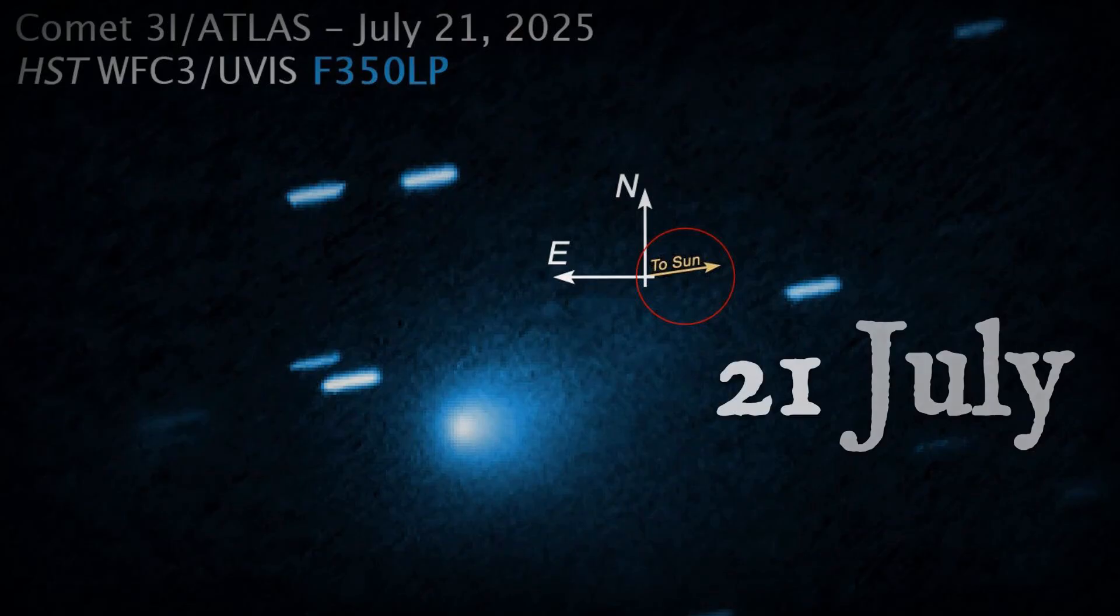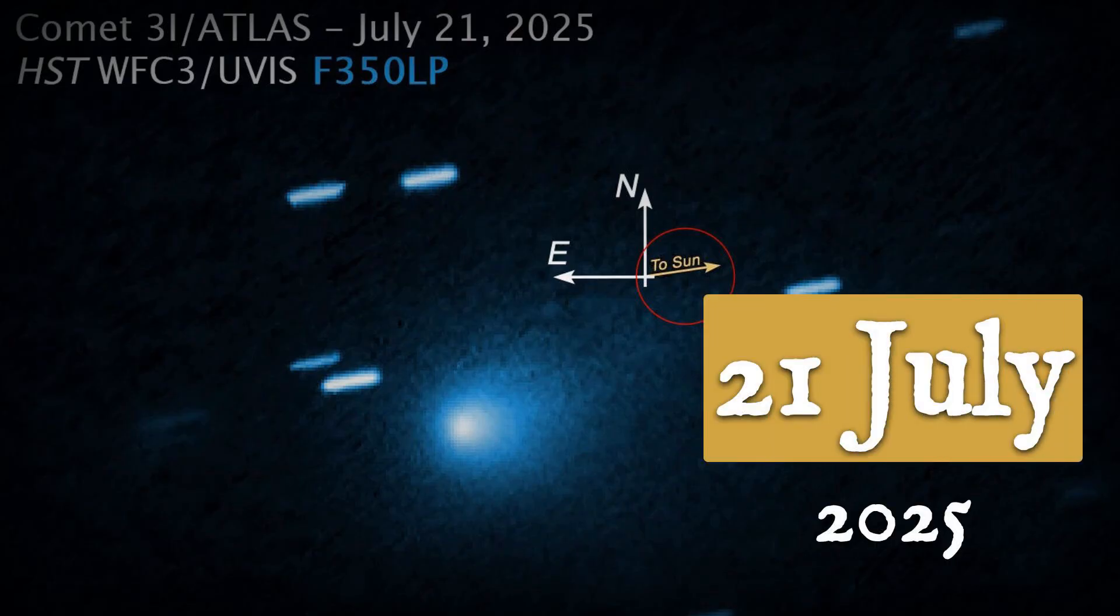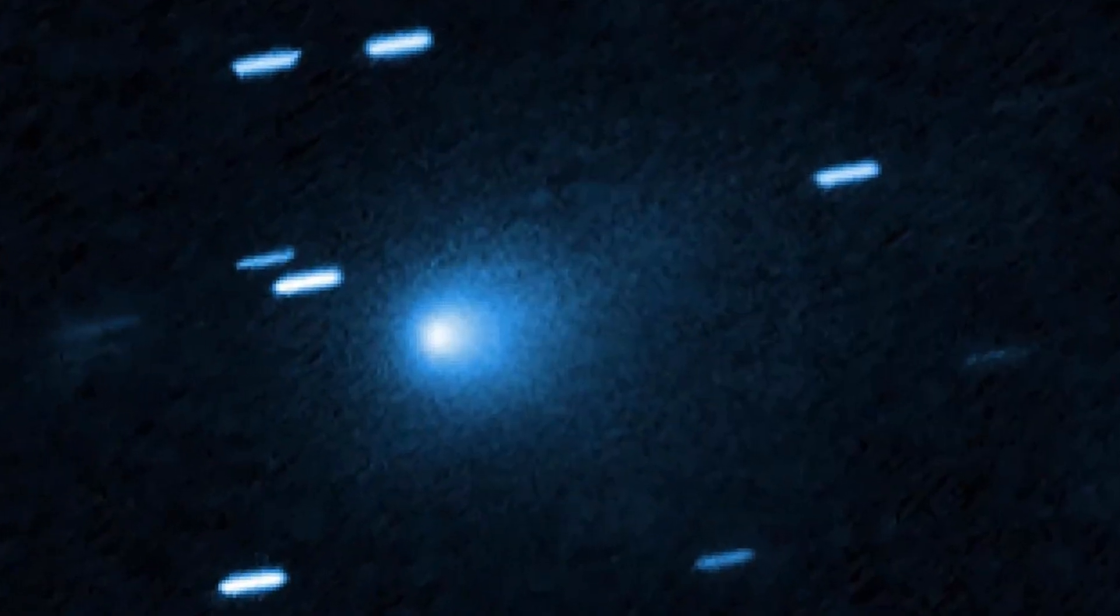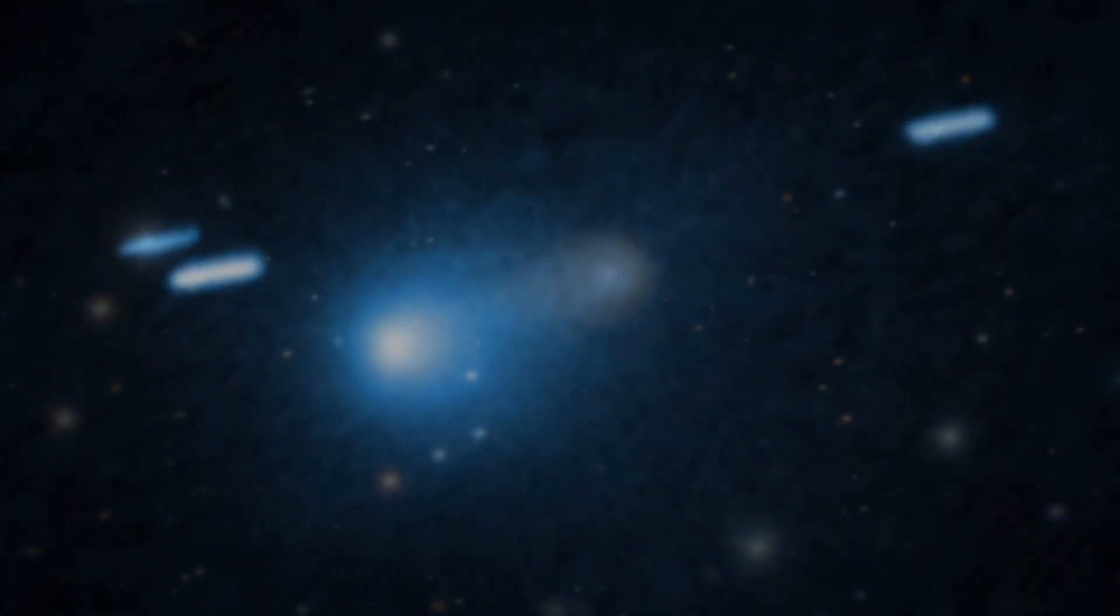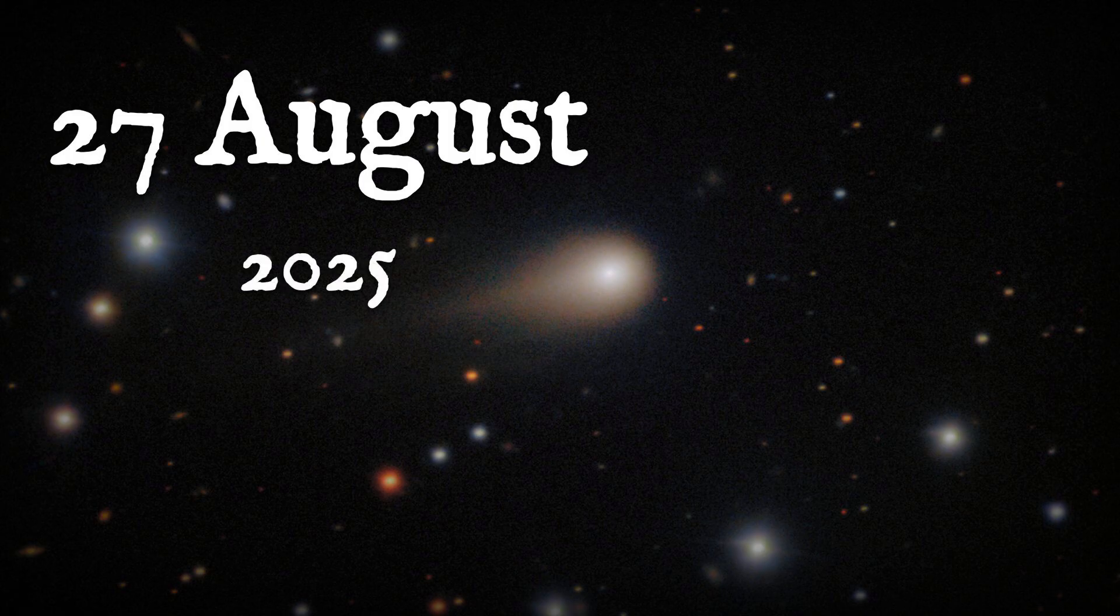On July 21st, Hubble captured 3i/Atlas with a sharp sunward fan, the anti-tail standing out against the blackness. By August 27th, Gemini South imaged a dramatic change. The fan had faded, and a more conventional tail stretched away from the sun.